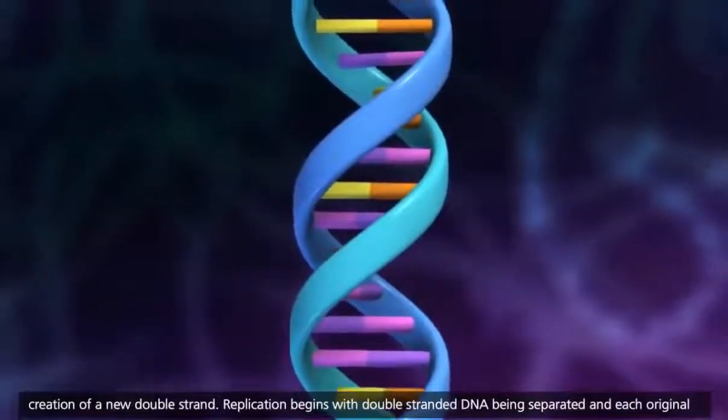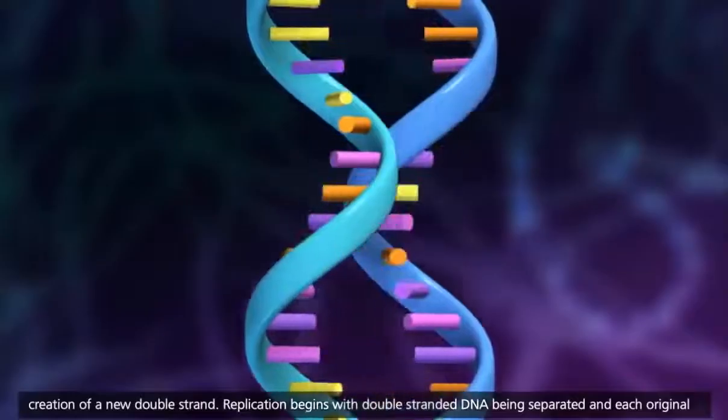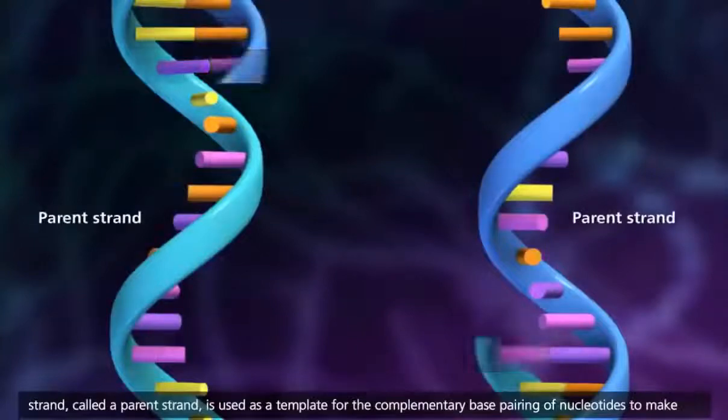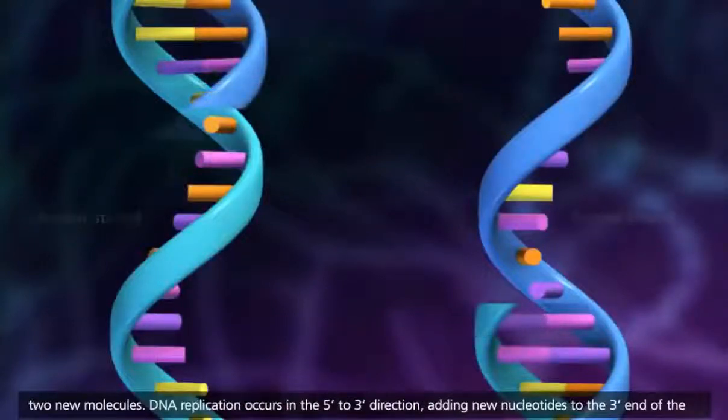Replication begins with double-stranded DNA being separated, and each original strand, called a parent strand, is used as a template for the complementary base pairing of nucleotides to make two new molecules.